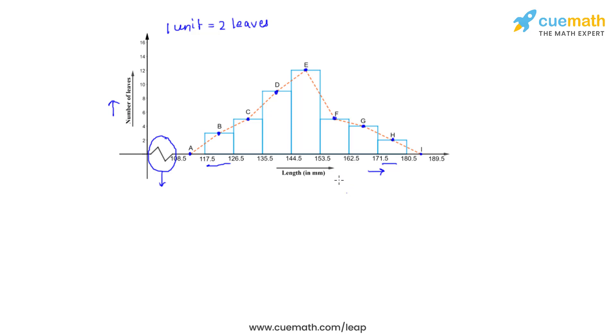Now we can observe that the maximum number of leaves have their lengths between 144.5 to 153.5 millimeters in length. So we can conclude that the maximum number of leaves do not have their length as 153 millimeters as was asked in the question. And this is how we solve this question.